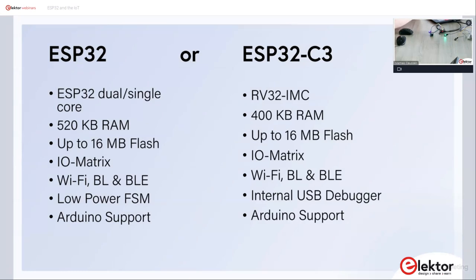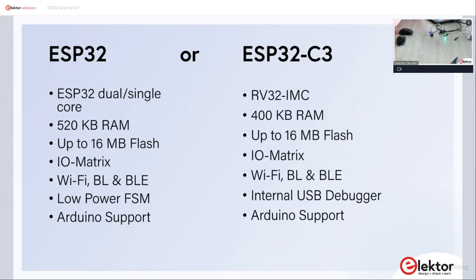The C3 has the same IO matrix, Wi-Fi, Bluetooth LE, a built-in user debugger for single-stepping without an external debugger, and a built-in USB serial converter. However, making that USB serial converter work fully requires digging into the Espressif IDF. It works with Platform IO to some extent, but it's more tightly bound to the Espressif IDF — that could be a subject for another webinar.